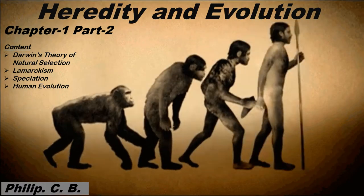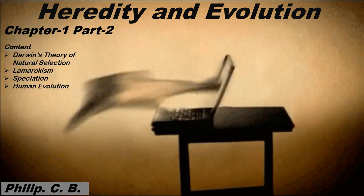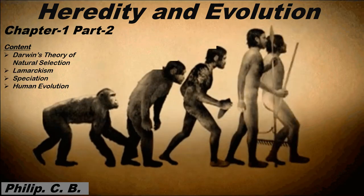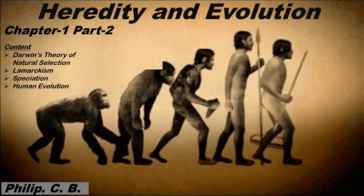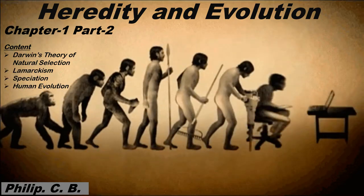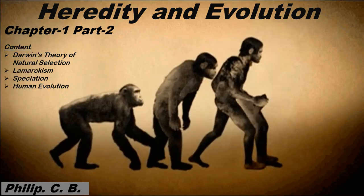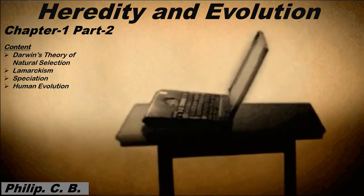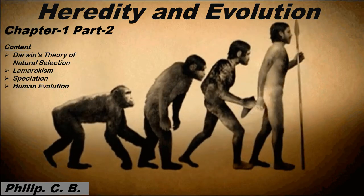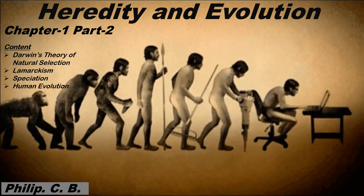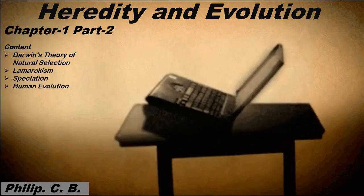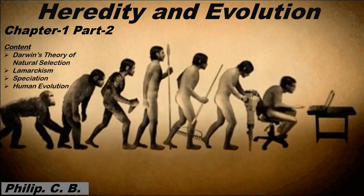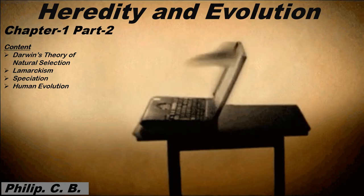Hello students, today we are going to learn the second part of Chapter 1: Heredity and Evolution. In this part we'll be learning Darwin's theory of natural selection, Lamarckism, speciation, and human evolution. Hopefully the first part is clear to all of you, as you have seen images and animations related to the topic.